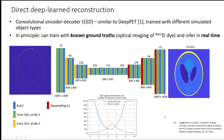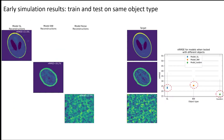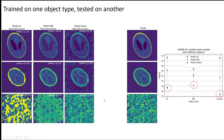The idea would be to reconstruct in real time the radiotracer distribution from that CMOS sensor array output. These are early results just from simulation data where we trained with a single object type — Shep-Logan phantoms in various configurations, brain web phantoms, random noise — and we get quite good high-quality reconstructions.